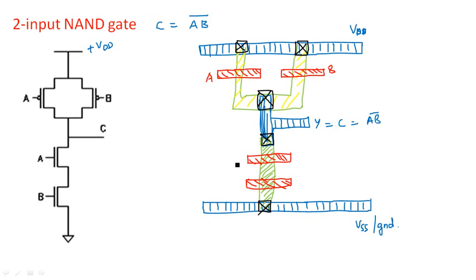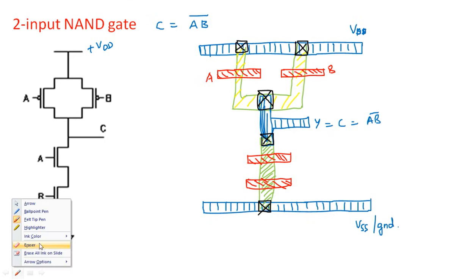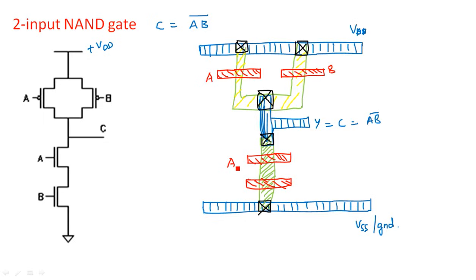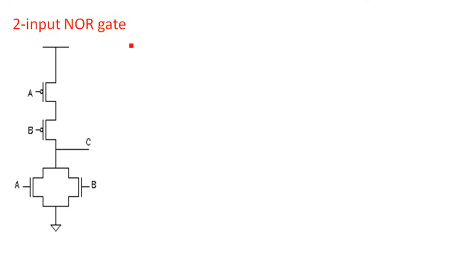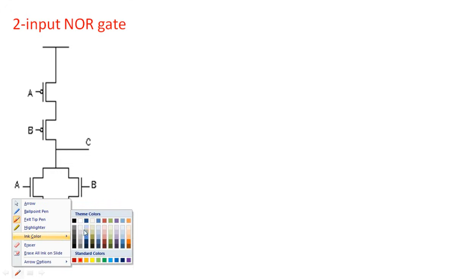Let us give the inputs: this is A and this is B. If you want, you can connect the top A and bottom A together and give a single A input, and similarly connect both B lines and give a single B input. But this type of representation is also acceptable — no need to route them together. This is the layout for the two-input NAND gate. Now let us look at another circuit, the two-input NOR gate.